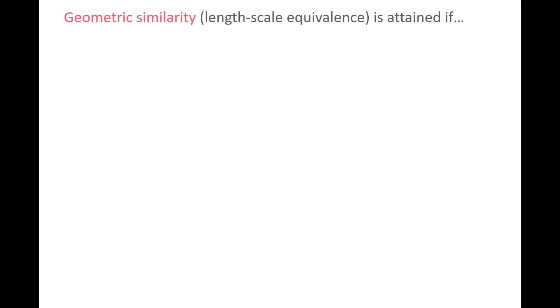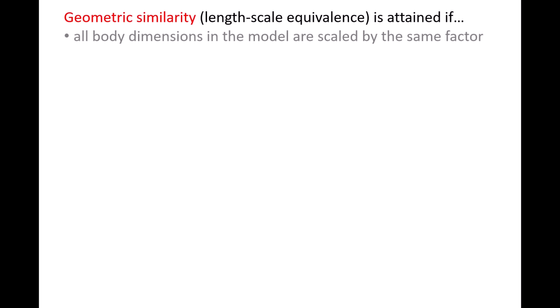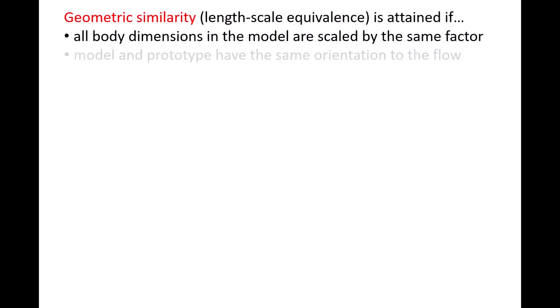The first type of similarity requirement between the model and prototype is geometric similarity. Geometric similarity between the model and prototype is attained if all dimensions of the prototype are scaled by the same factor when constructing the model, and both the model and prototype have the same orientation relative to the flow.